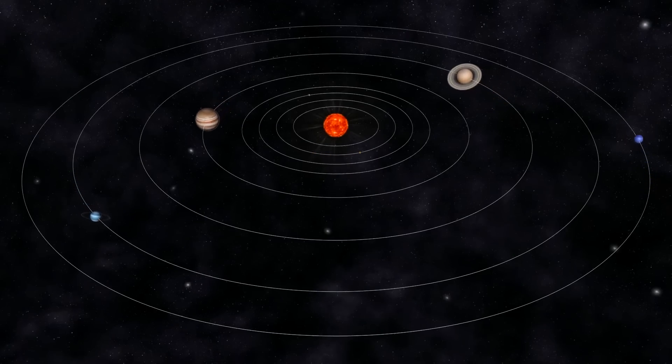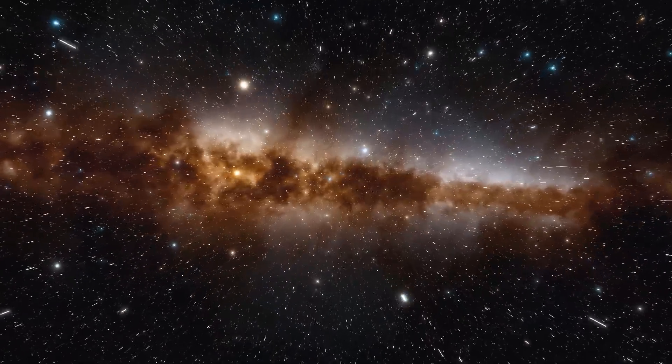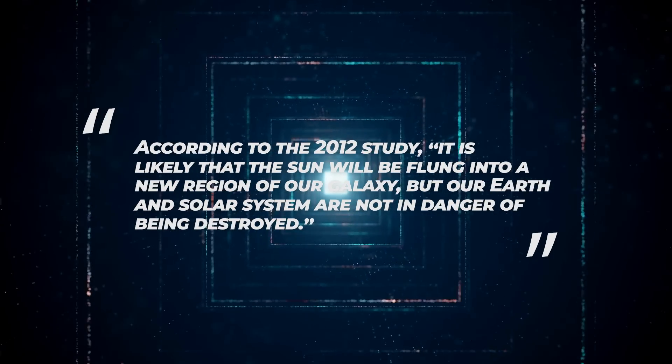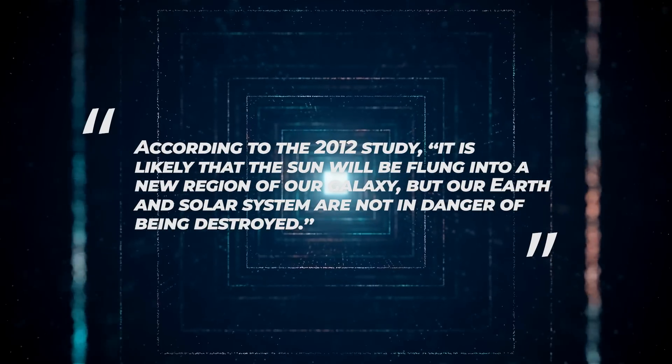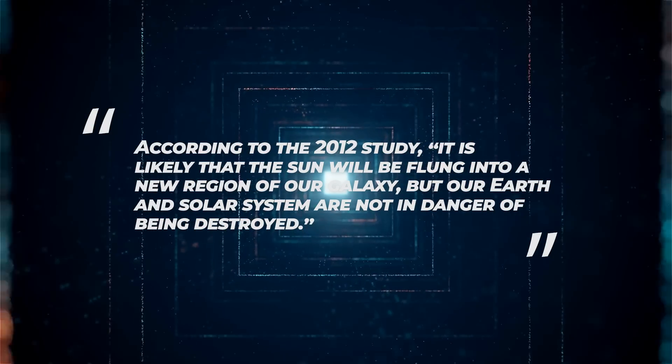Simulations reveal that our solar system will be thrown much further away from the galactic center than it is now. According to the 2012 study, it is likely that the Sun will be flung into a new region of our galaxy, but our Earth and solar system are not in danger of being destroyed.